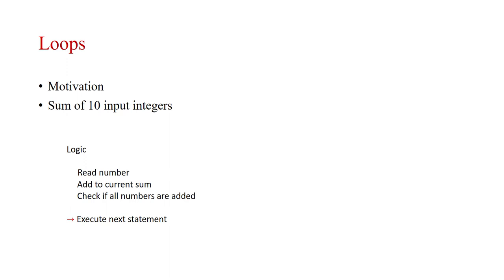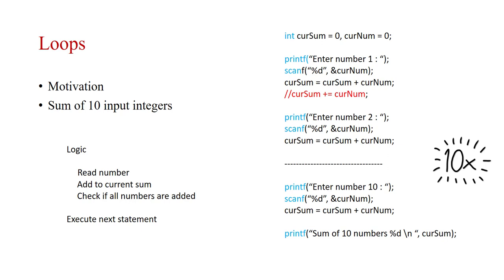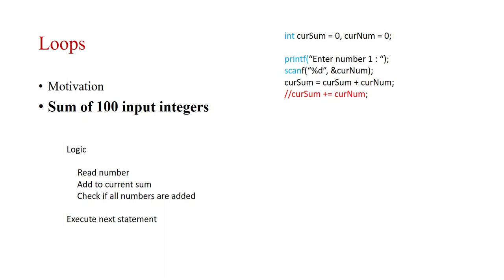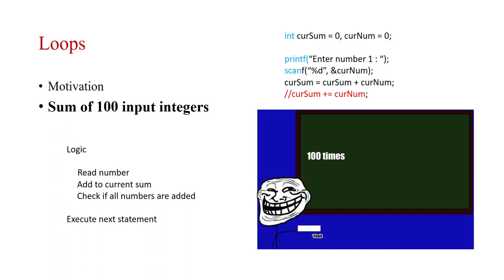One way to do it is to manually write a scanf and printf for each number — 10 times. That's three lines per number, so around 30 lines for 10 numbers. But what if I asked you to write code for 100 numbers? In that case you'd be writing around 300 lines manually, which is very hard to do.